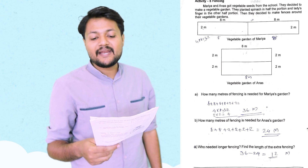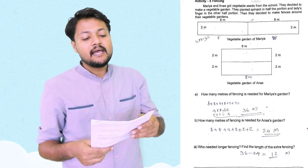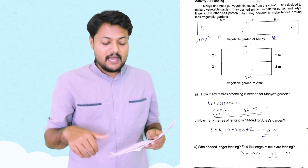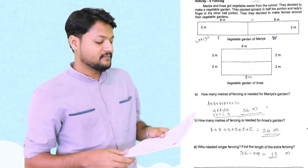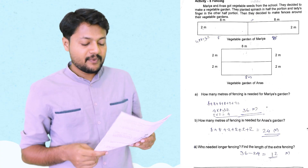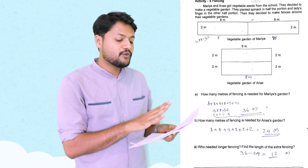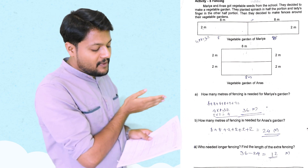For example, Maria and Ana had some vegetable seeds from the school. They decided to make a vegetable garden. They planted spinach in half the portion and lady's fingers in the other half portion. Then they decided to make fences around their vegetable garden. How many meters of fencing is needed for Maria's garden? It is the perimeter of the garden. The answer is 36.